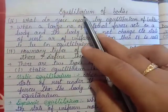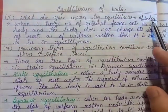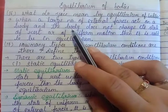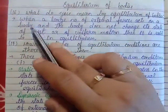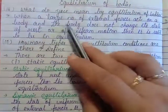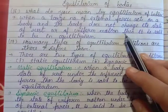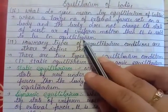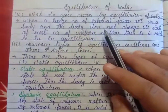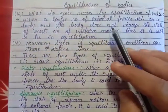Now let's look at equilibrium of bodies. A body is always surrounded by a large number of forces. When a large number of external forces act on a body and the body does not change its state of rest or uniform motion, it is said to be in equilibrium. If it is at rest it continues at rest, and if in uniform motion it continues in motion.